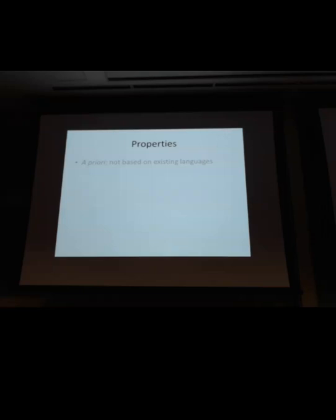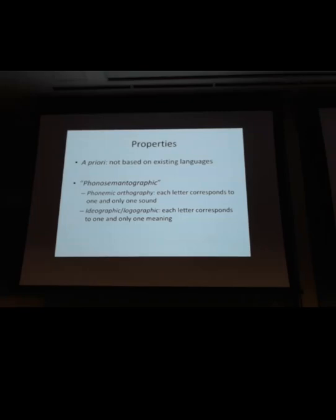Some of the properties of complex lang: it's a priori, and the intention was to make it what I call phonosemantic graphic. So every letter corresponds to one sound, and every letter also corresponds to just one meaning. So the hope was that if you learned the 32 letters in the language, you would understand the whole language. But unfortunately, more realistically, you'll need to know some physics, math, set theory.